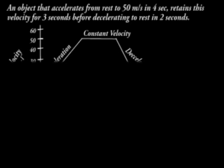Velocity time graph. When the velocity of a moving object is recorded at time intervals, a velocity time graph is obtained. Consider an object that accelerates from rest to 50 meters per second in 4 seconds, retains this velocity for 3 seconds before decelerating to rest in 2 seconds.